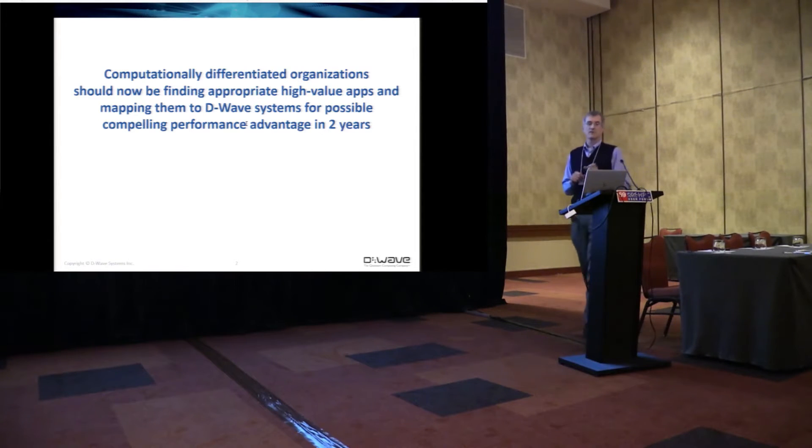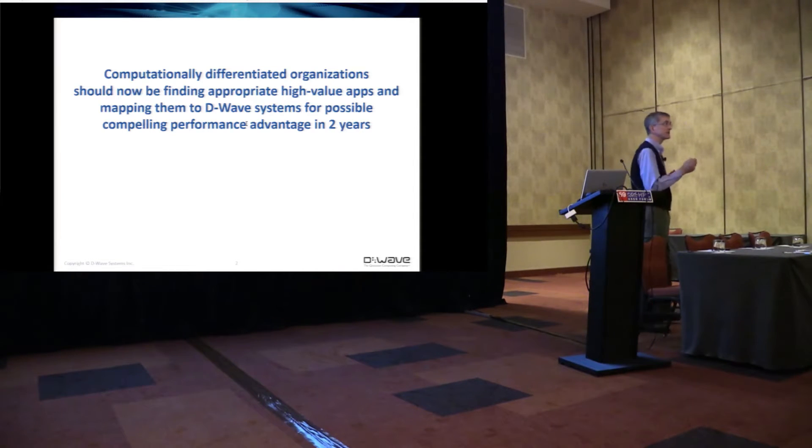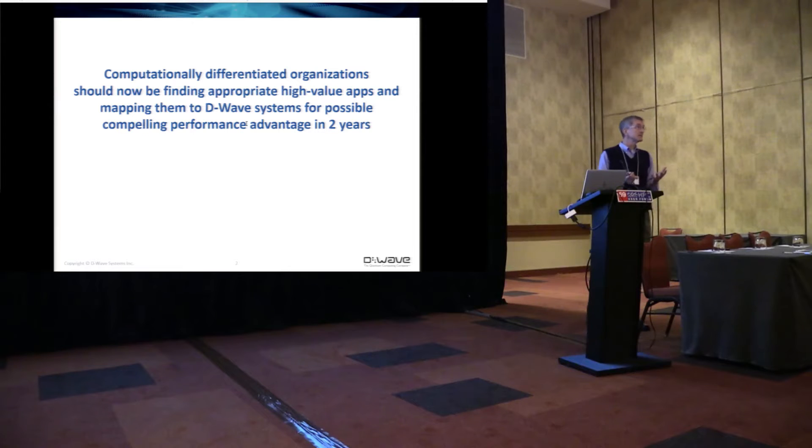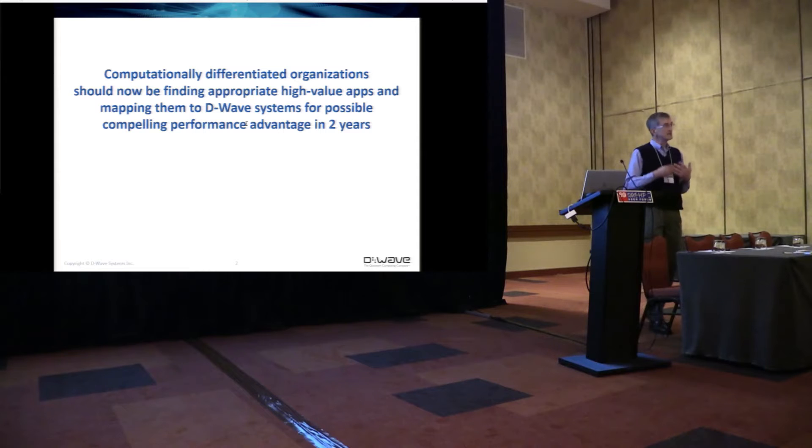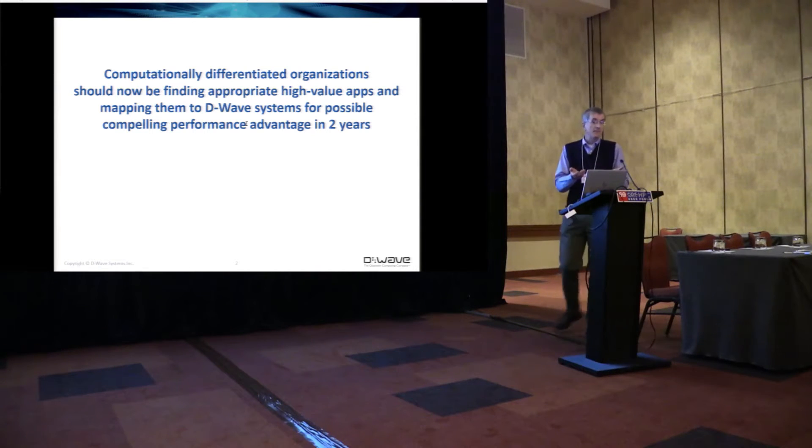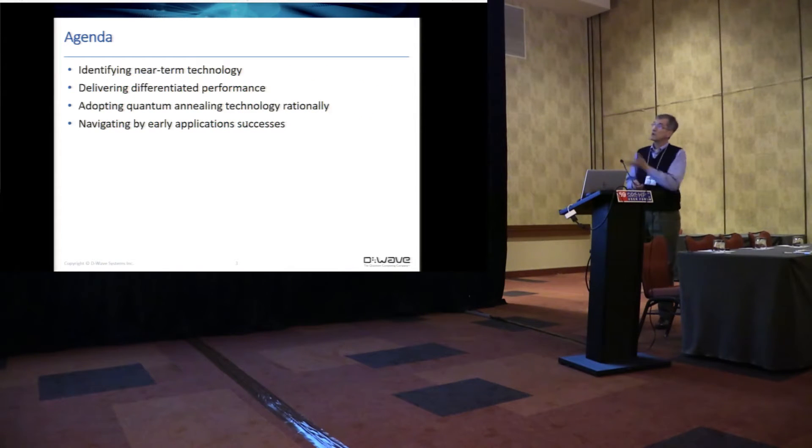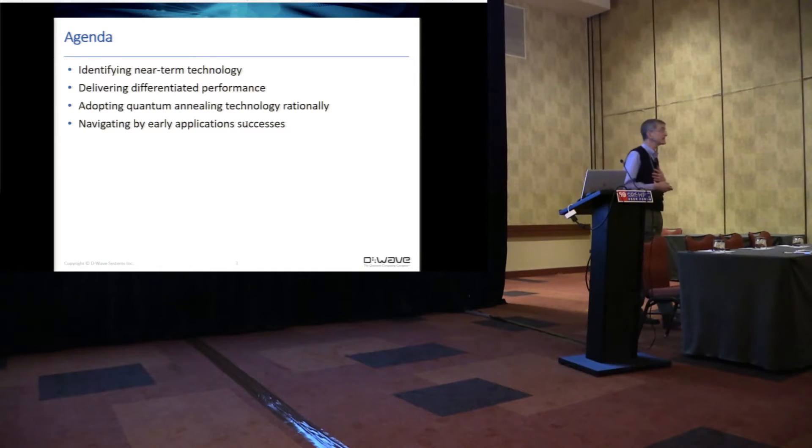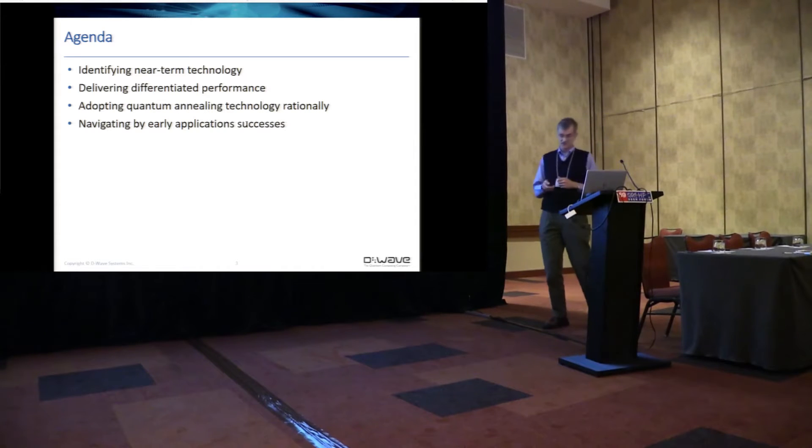So let me unpack a few phrases. Computationally differentiated organizations: if your organization thinks that your advantage versus your competition is the fact that you compute better, that's what I'm talking about. Finding appropriate high value applications. Appropriate here means things that are likely to get benefit from our style of processor. That's a little fuzzy. High value apps: you're going to want to choose something high value because this is not easy to do today. It takes quite a bit of thought. So I wanted to cover identifying near-term technology, how we expect ourselves to deliver differentiated performance, adopting quantum annealing technology in a rational way, and then navigating by some of the early application successes we've seen to date.